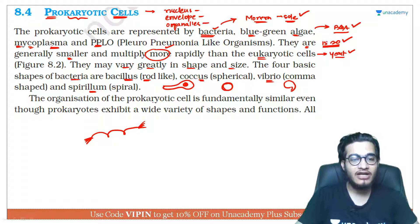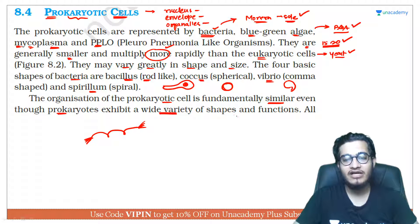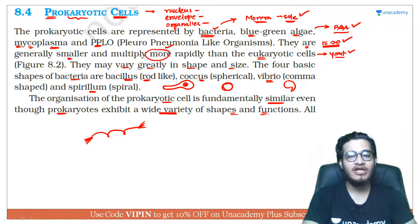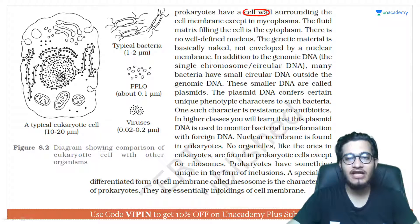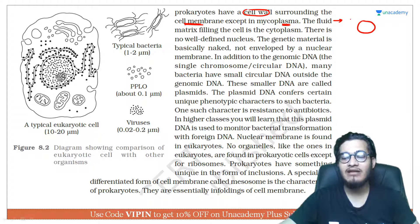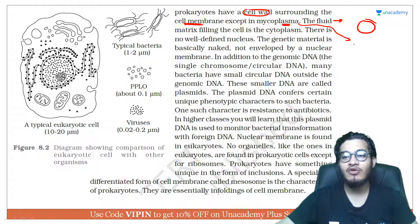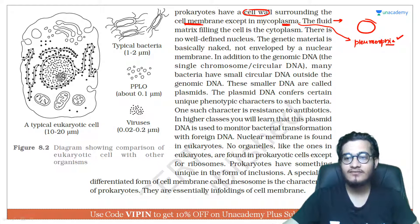They are generally smaller and multiply more rapidly than eukaryotic cells. A small eukaryotic cell like yeast takes about 1.5 to 2 hours to divide, but smaller bacteria can double their number in just 15 to 20 minutes. The organization of prokaryotic cells is fundamentally similar even though prokaryotes exhibit a wide variety of shapes and functions. All prokaryotes have a cell wall surrounding the cell membrane except mycoplasma. Because mycoplasma lacks a rigid cell wall, it is called pleomorphic — meaning it can change its shape.